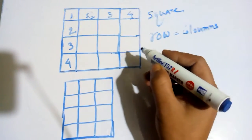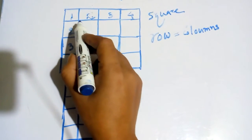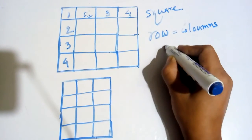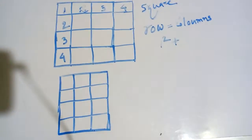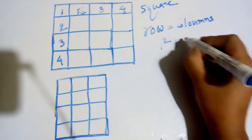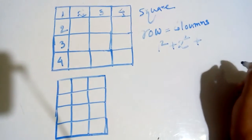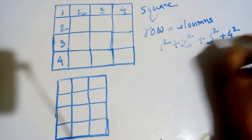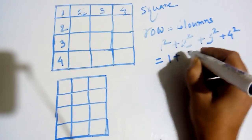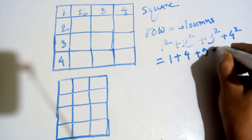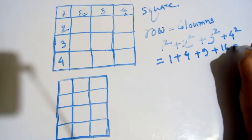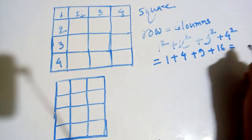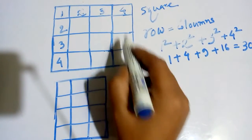When rows equal columns, this is a perfect square. The formula — the easiest trick — is: 1² + 2² + 3² + 4². One squared is 1, two squared is 4, three squared is 9, and four squared is 16. So the result is 16 + 9 = 25, plus 4 = 29, plus 1 = 30. There are a total of 30 squares in this figure.